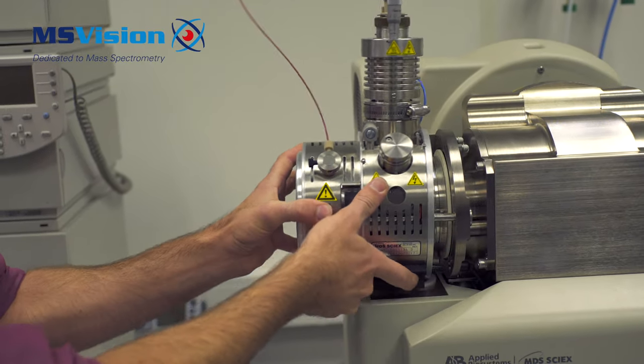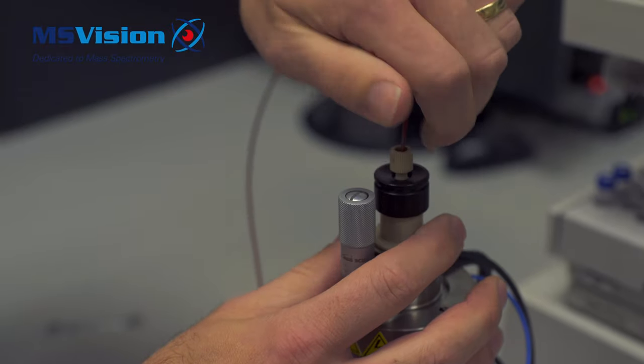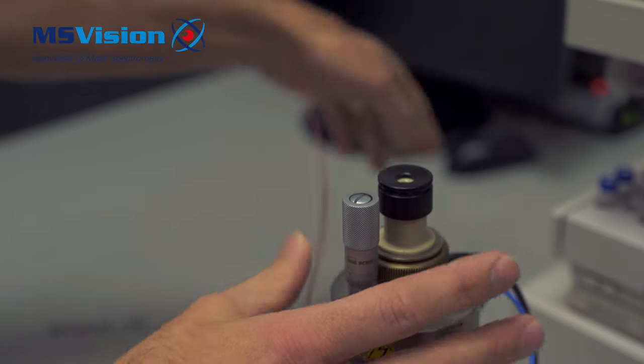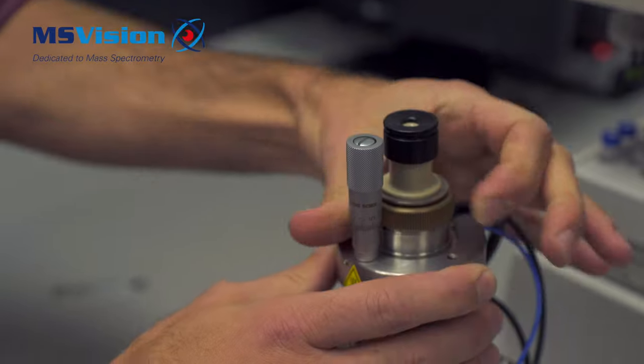Remove the source and HPLC tubing. Unscrew the brass nut to remove the ESI probe.